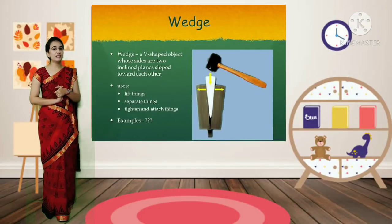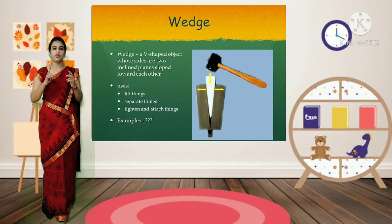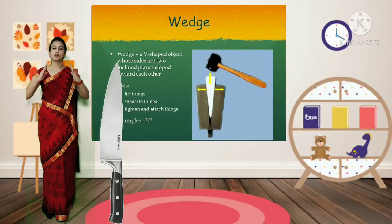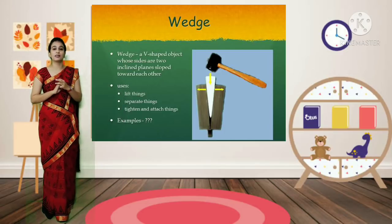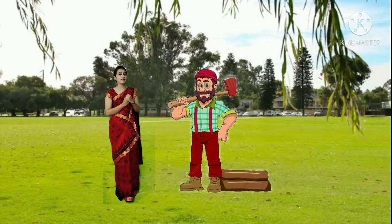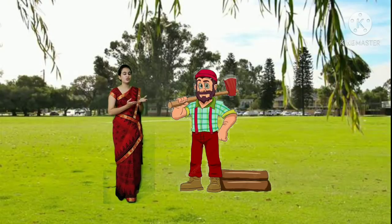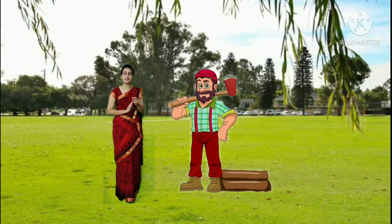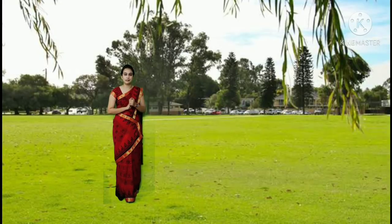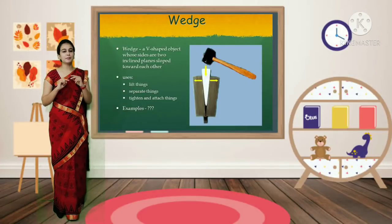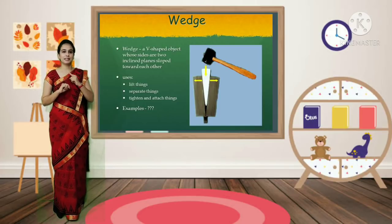The next simple machine is the wedge. When two inclined planes meet at one end, they form a sharp edge in a V-shape - that is a wedge. For example, in a knife you can see two slopes meeting at one end to form a sharp edge. A wood cutter uses an axe, which is also a wedge. Wedges are used for splitting or cutting things. Knife and axe are examples of wedges - simple tools that make our work much easier.